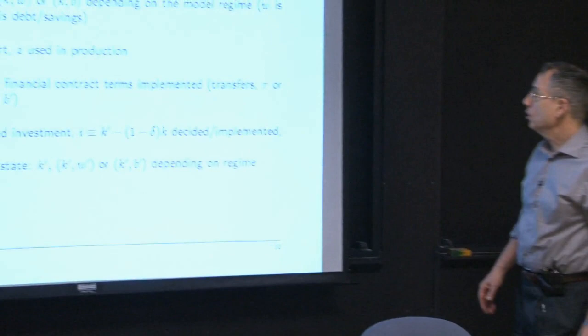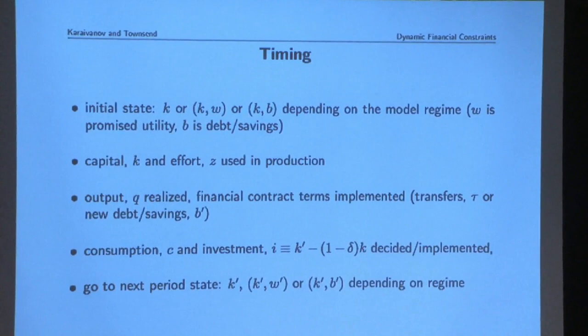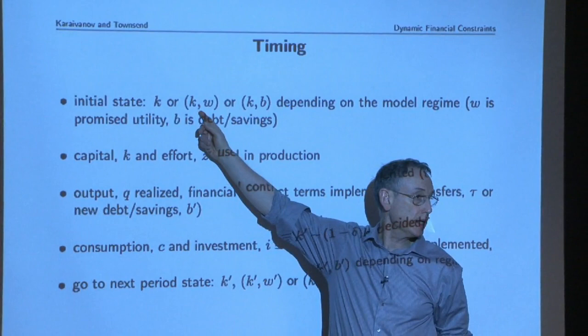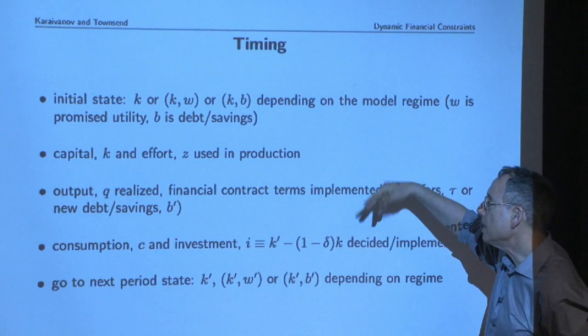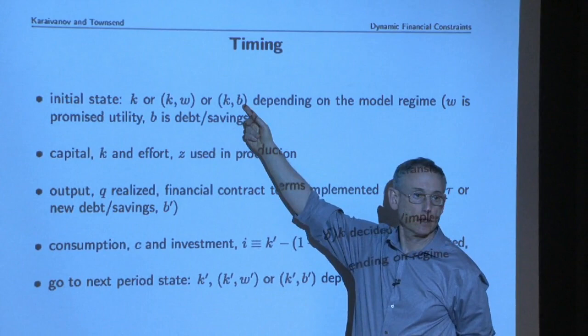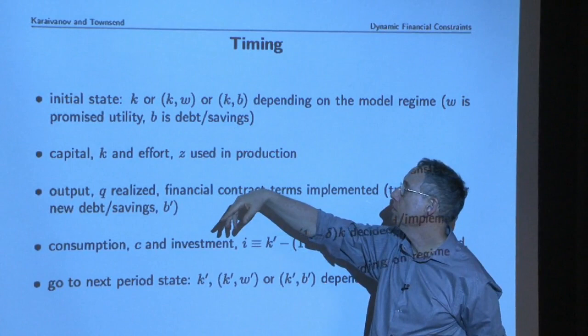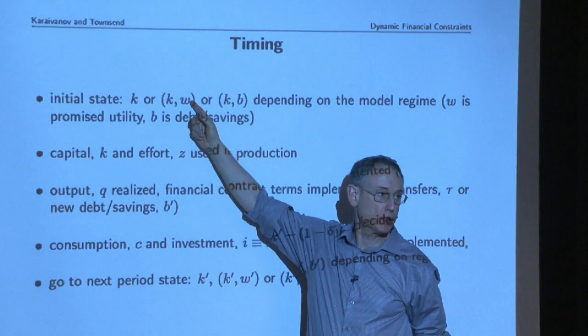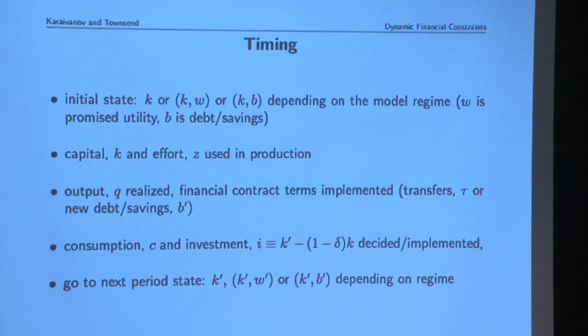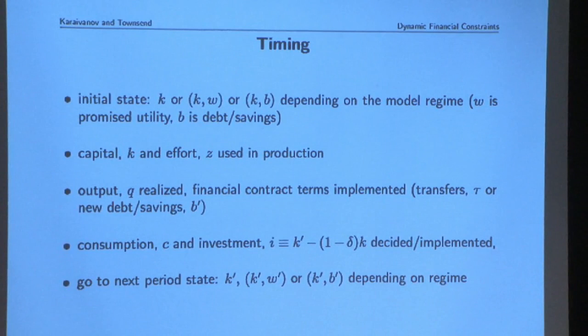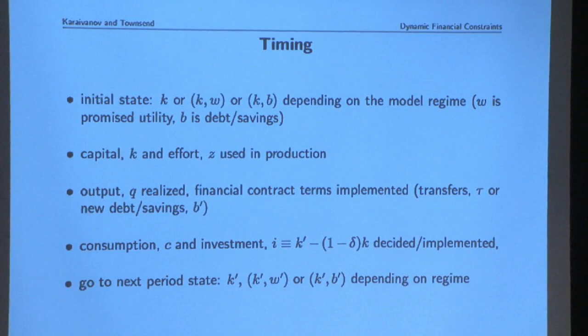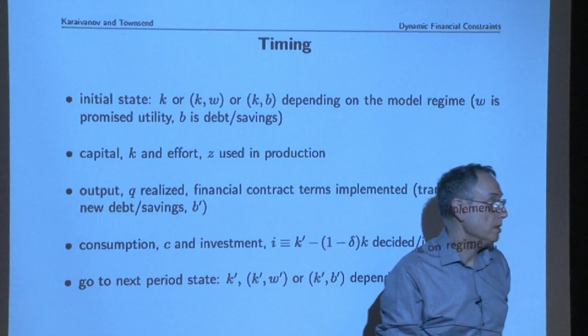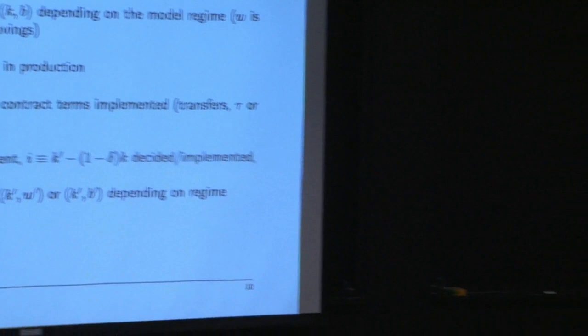What's the initial state for a household? At least the initial capital stock when we visit them in the baseline survey. The second argument depends on the financial regime—if it's borrowing and lending, it's their current assets or net indebtedness. Or if it's one of these contract regimes, it's essentially some utility constraint, some reservation utility as if it had been promised in the past. Unobserved utility is not seen, so we're going to have to parameterize it with a mean and variance and estimate this unobserved distribution of debt or promises in the population.